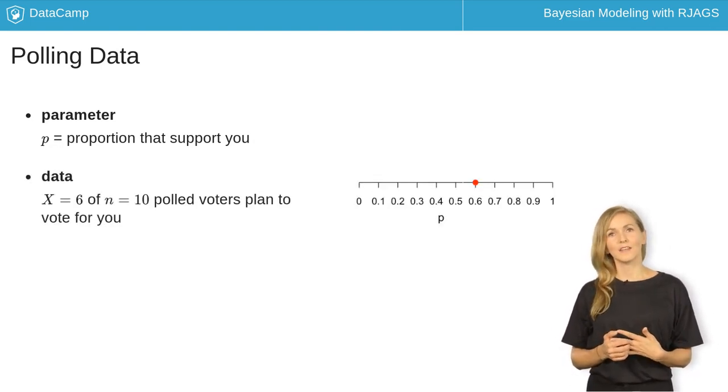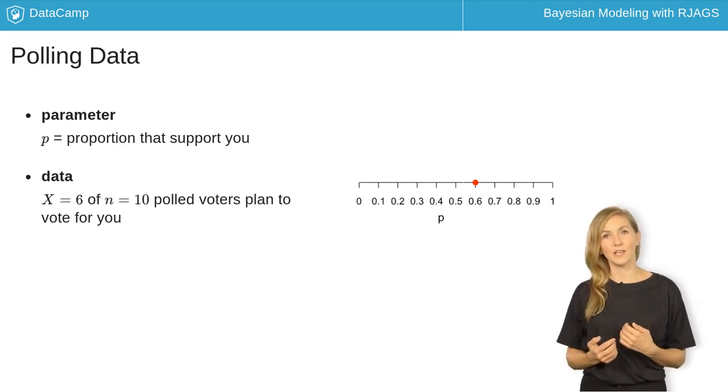To gain insight into p, your campaign conducted a small poll and found that x equals 6 of n equals 10, or 60 percent of voters, support you.